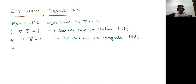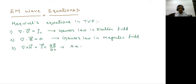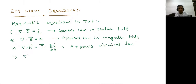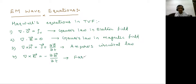The third Maxwell equation is curl of magnetic field intensity equal to J vector plus ∂D/∂t. This is the Maxwell equation we get from Ampere's Circuital Law. And the fourth Maxwell equation is curl of E equal to minus ∂B/∂t, which we get from Faraday's Law of electromagnetic induction.